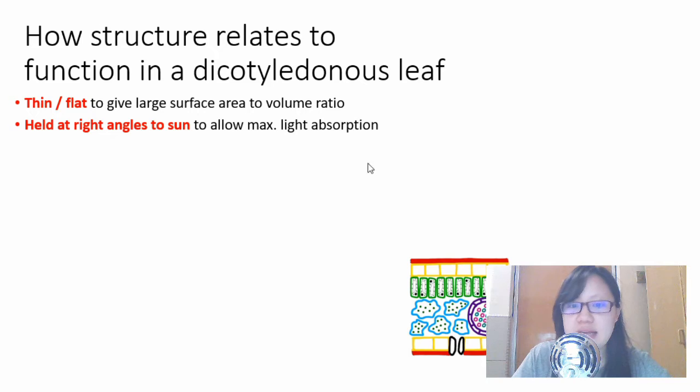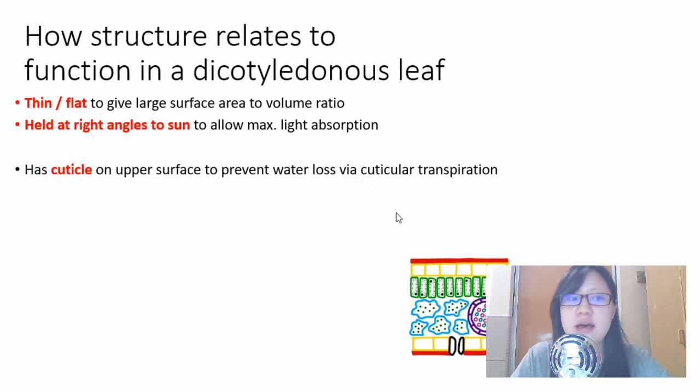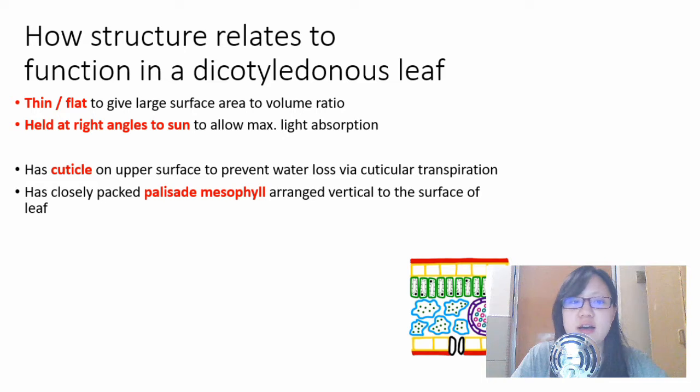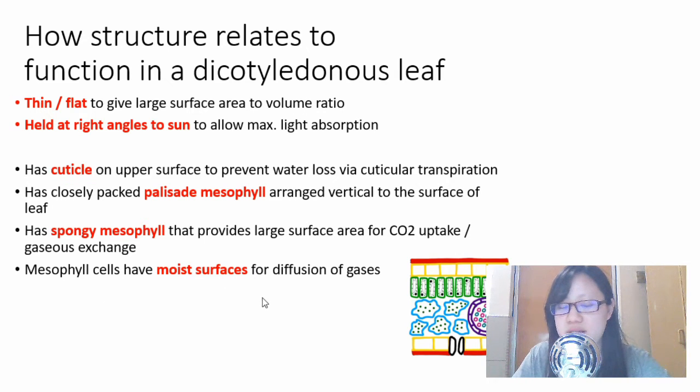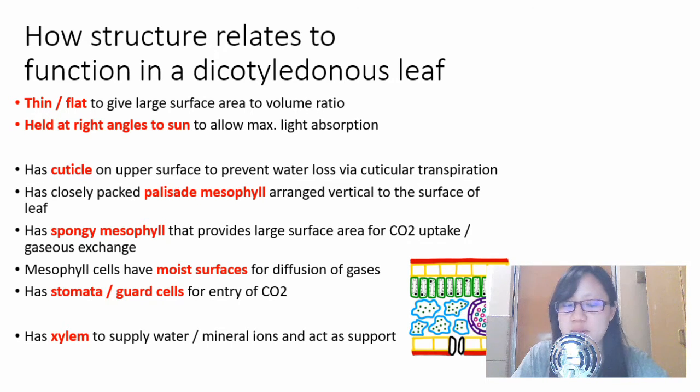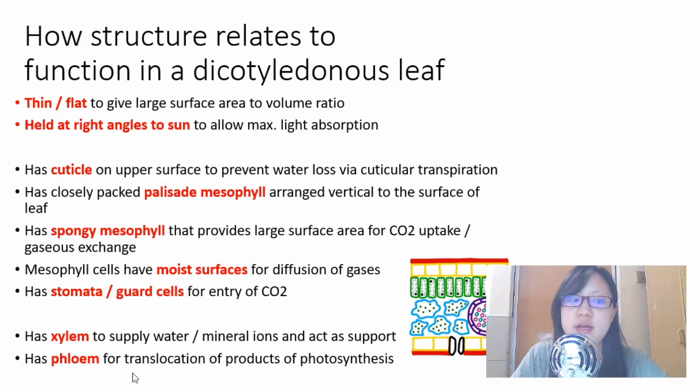We can also talk about the leaf's internal structure, not only focusing on palisade mesophyll cells but every single layer. It has a cuticle to prevent water loss via cuticular transpiration. Palisade mesophyll cells for obvious reasons. Spongy mesophyll - both mesophylls have moist surfaces for diffusion of gases and provide large surface area for CO2 uptake. Stomata and guard cells - two guard cells, one stoma - for entry of carbon dioxide. Xylem to supply water and mineral ions and for support, and phloem for translocation of products of photosynthesis.